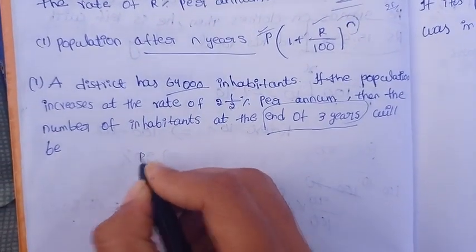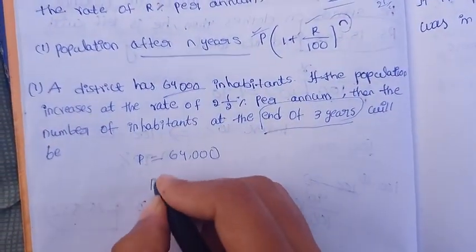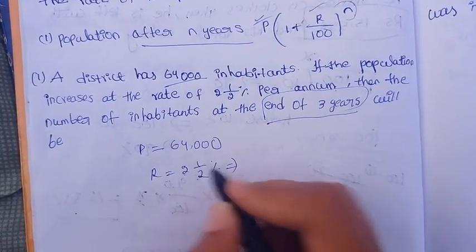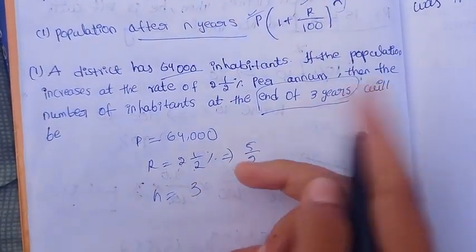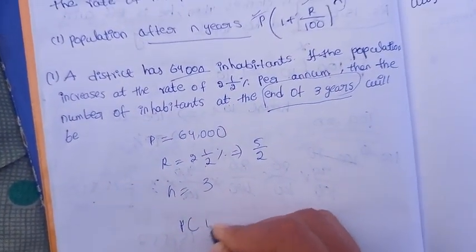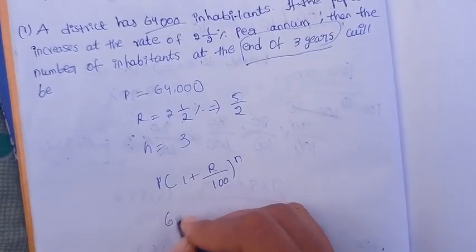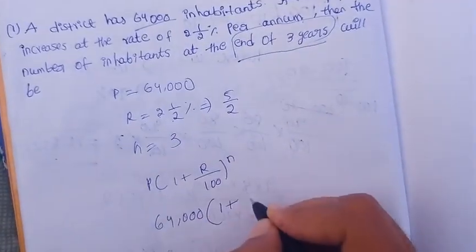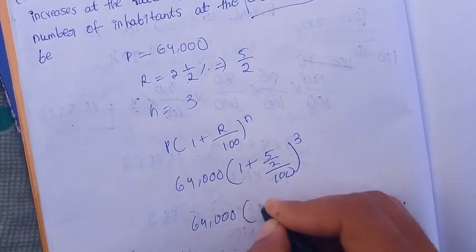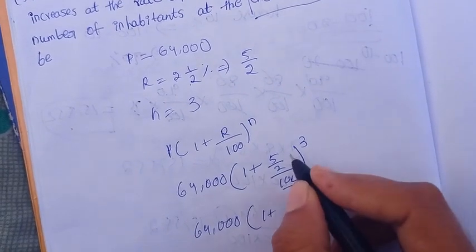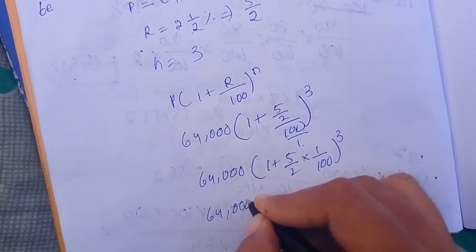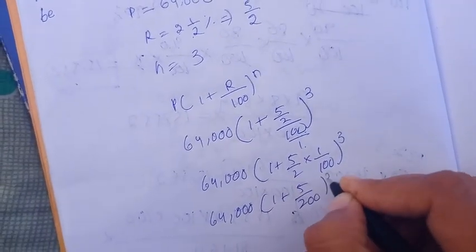We substitute into the equation: 64,000 into 1 plus R divided by 100, whole power N. Substituting R as 5/2 divided by 100 gives 5/200. So we get 64,000 into 1 plus 5 divided by 200, whole power 3. That simplifies to 64,000 into 1 plus 1/40, whole power 3.